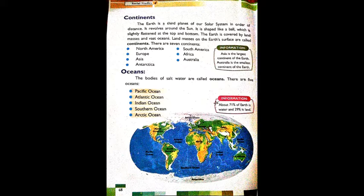The large land masses on earth are called continents. There are seven continents in total. They are: North America, South America, Europe, Africa, Asia, Australia and Antarctica. Among these, Asia is the largest continent of the earth and Australia is the smallest continent of the earth.